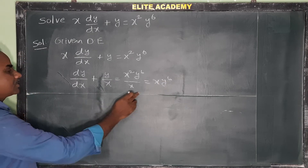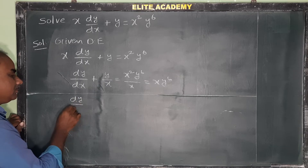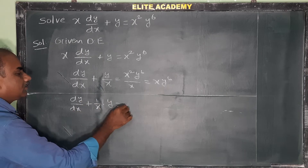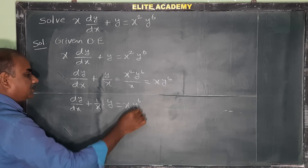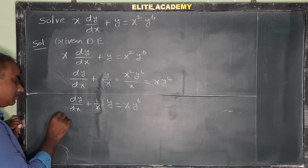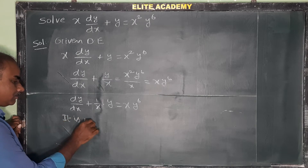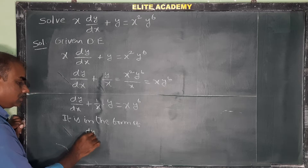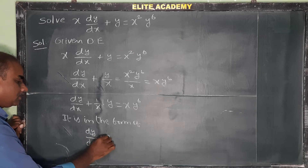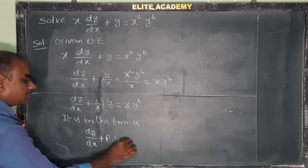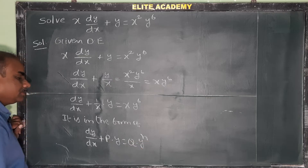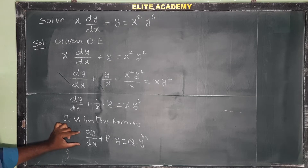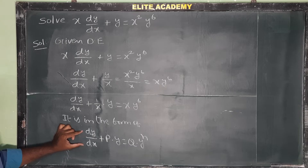Now this equation is in the form dy/dx + P·y = Q·y^n, specifically dy/dx + (1/x)·y = x·y⁶. This is not a linear differential equation in terms of y — it is called a Bernoulli differential equation in terms of y.